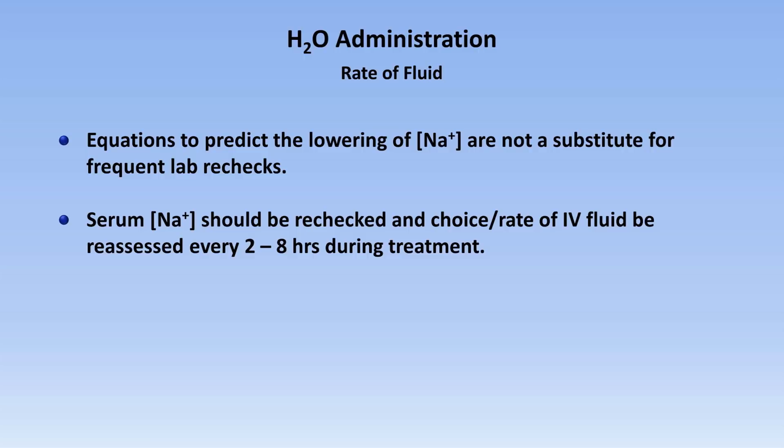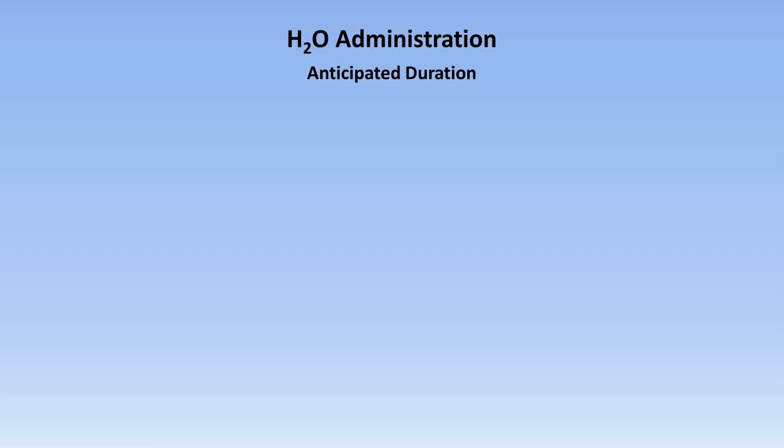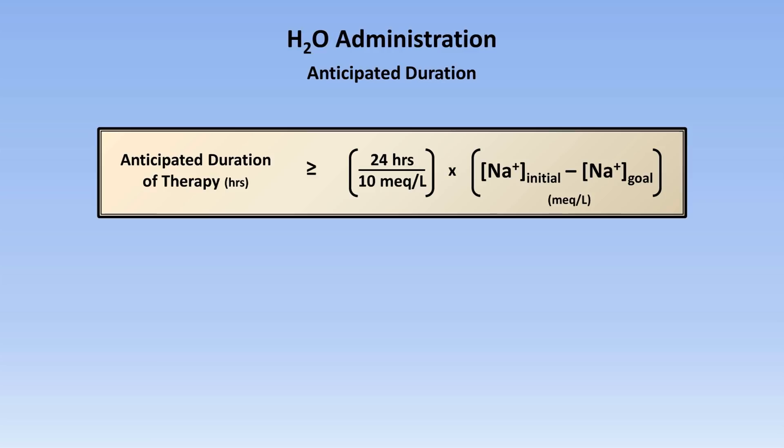Calculating the anticipated duration is not strictly necessary, though it can give you and the patient's family an idea of how long it might take for the problem to resolve. The anticipated duration of therapy is greater than or equal to 24 hours divided by 10 mEq/L — the maximum rate at which the patient should be corrected — times the difference between the initial sodium and goal sodium. This is a best-case scenario estimate, as the equal sign is only accurate if our estimation of appropriate fluid rate was perfect, which it almost never will be.